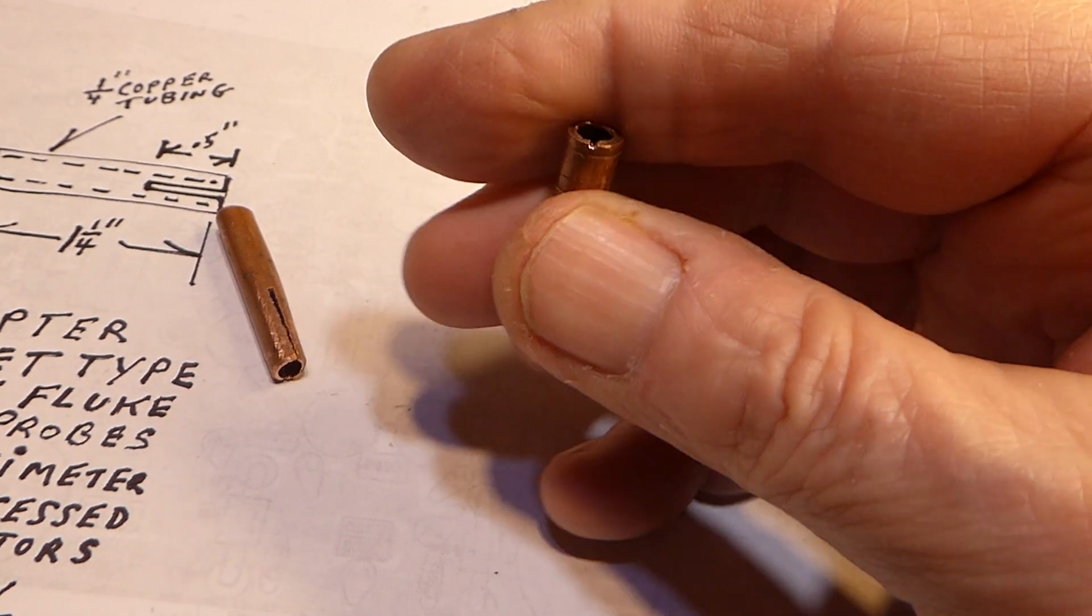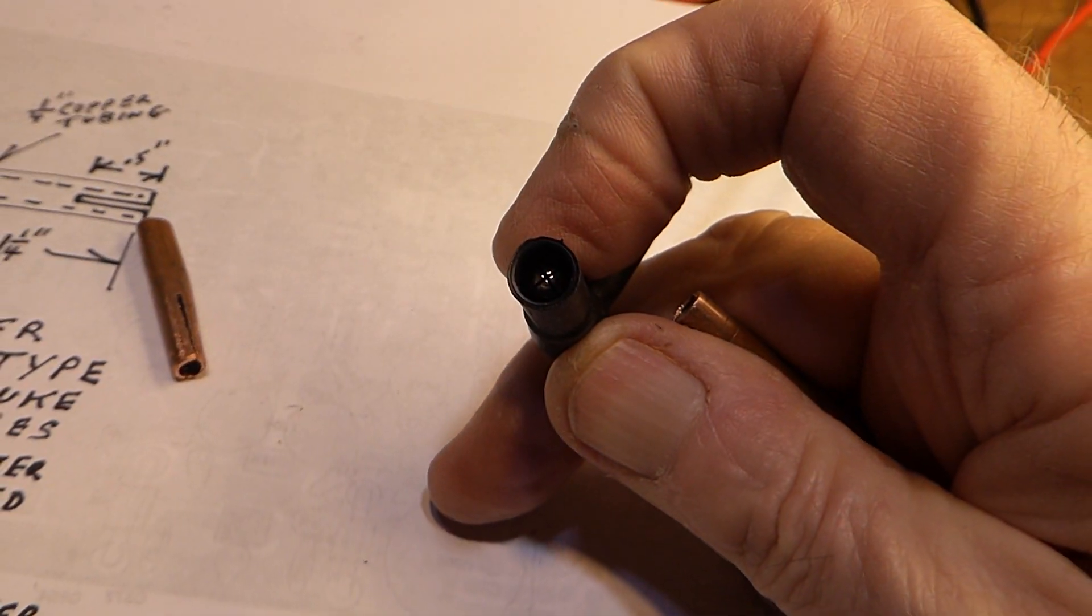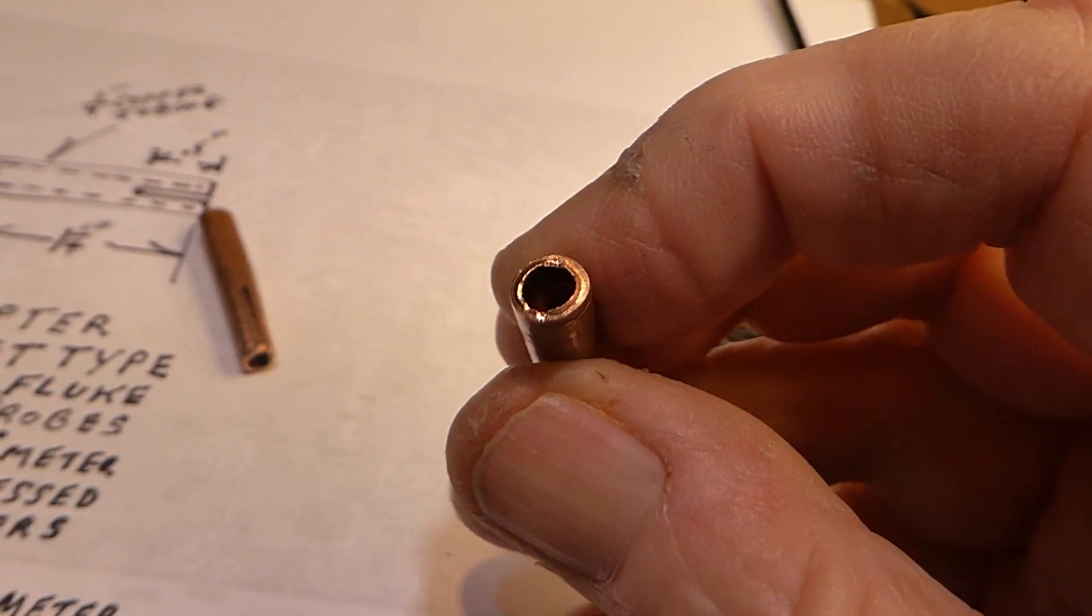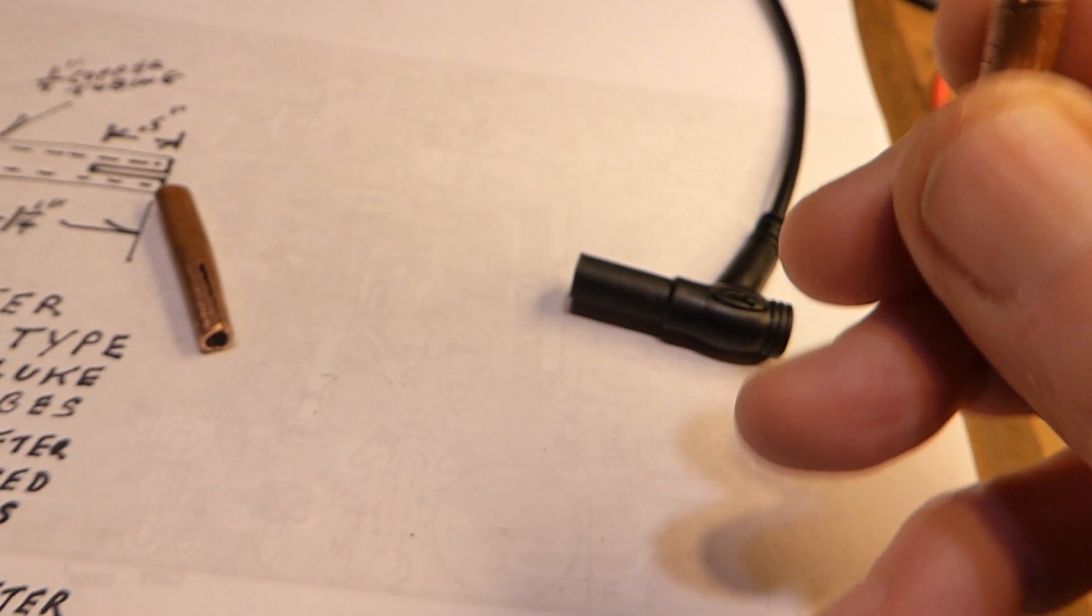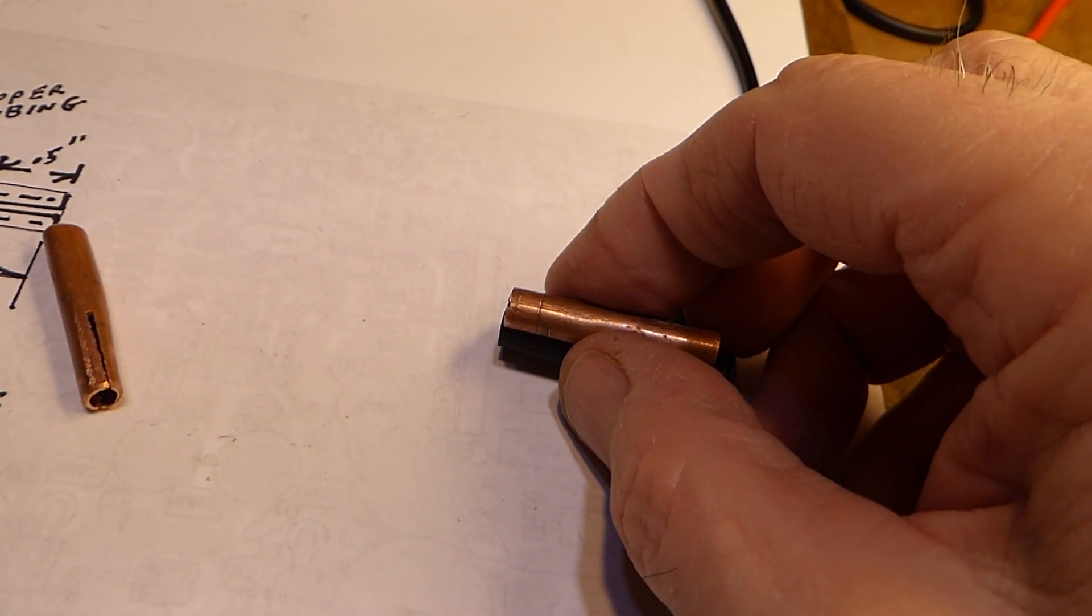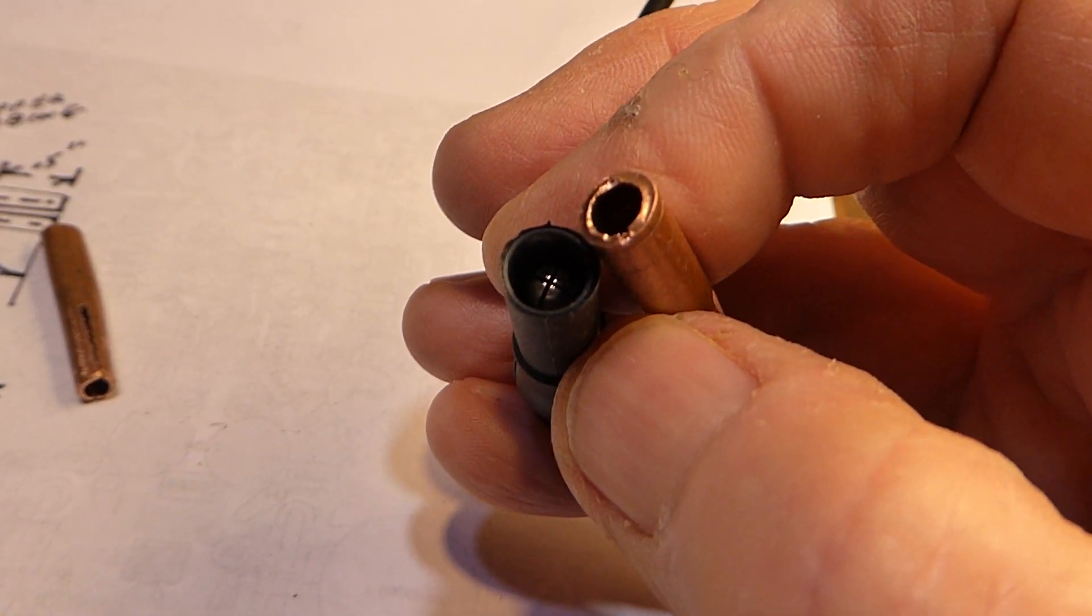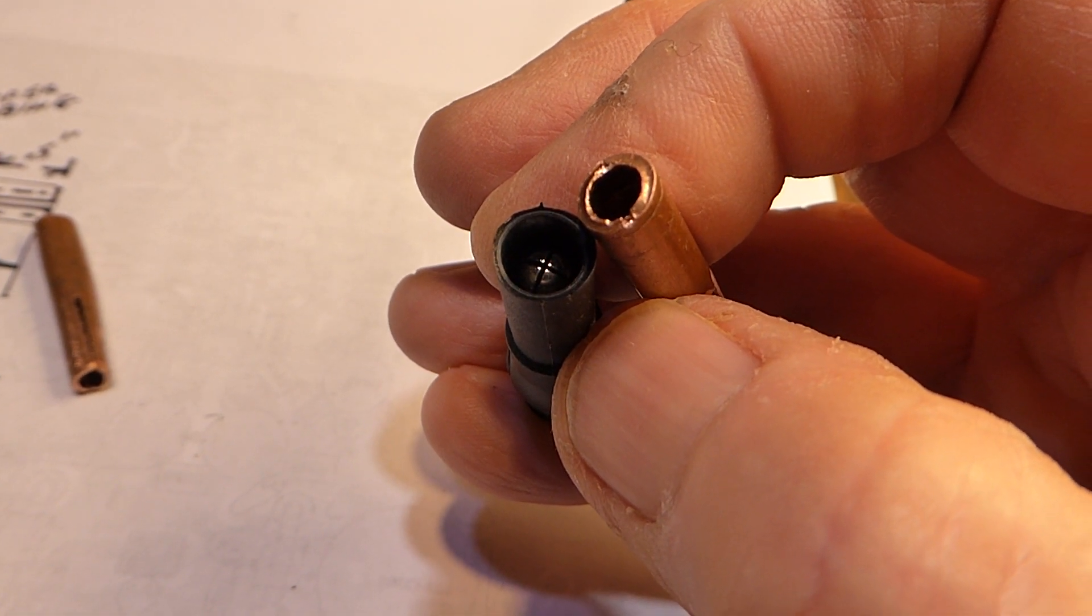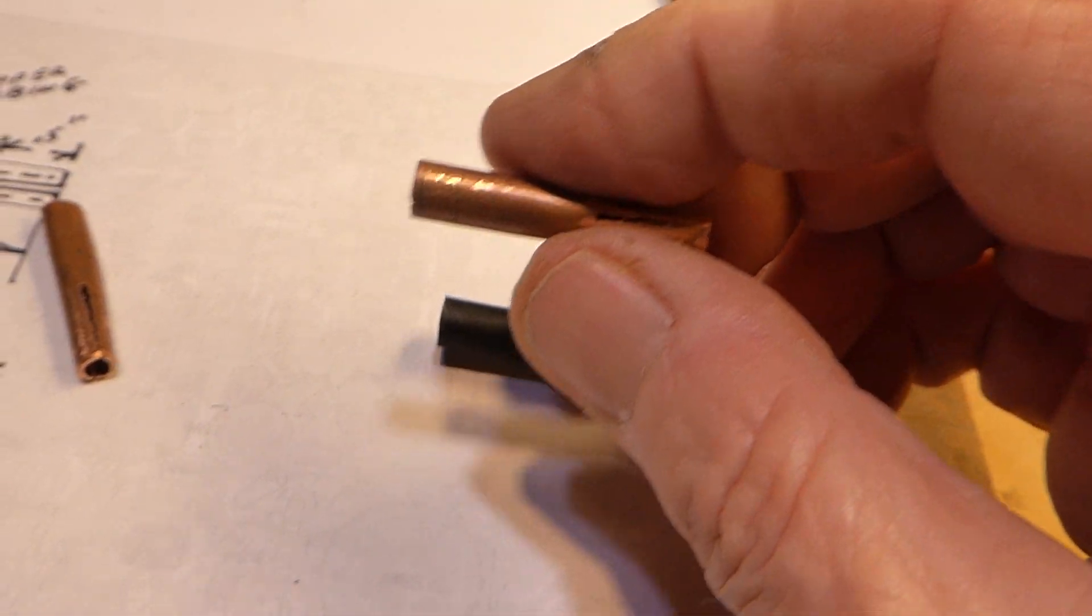Then I found out that it was a bit too large on this side, which would go into these Fluke type probes which have the recessed pin down in there. So I squeezed it with a pair of pliers right up here and got a nice snug fit. The pins down in there have got little spring things on the sides, like banana pins, so they grip inside really nice and make good contact.